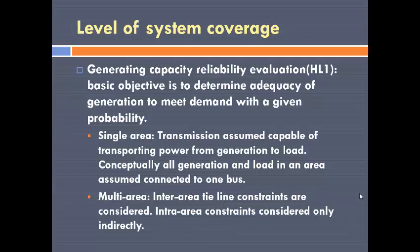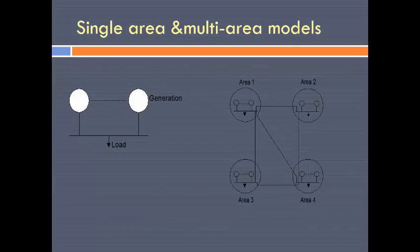The generating capacity reliability, or hierarchical level one, can be subdivided into two parts. One is the single area reliability evaluation. In the single area reliability evaluation, we assume that the comparison is between the generation and load, and the transmission is assumed to be capable of transporting power from generation to load. Conceptually, all the generation is connected to a single bus and all the load is also connected to a single bus.